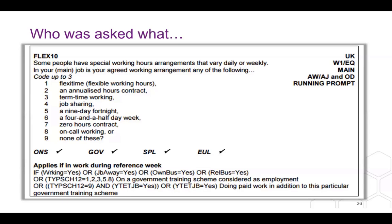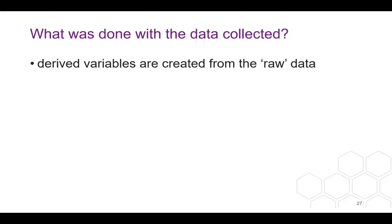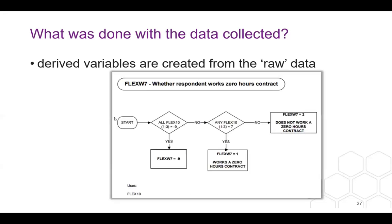This is a typical view of what somebody asking the question would see — asking about working arrangements with a set of conditions for why you'd be asked this. What happens then is we derive a number of variables, where understanding what the variable means is quite important. In this example, we're looking at whether somebody works a zero-hours contract — it goes through a series of decisions: if the responses are missing the data is missing; if any response is seven, which is a zero-hours contract, then they have one.